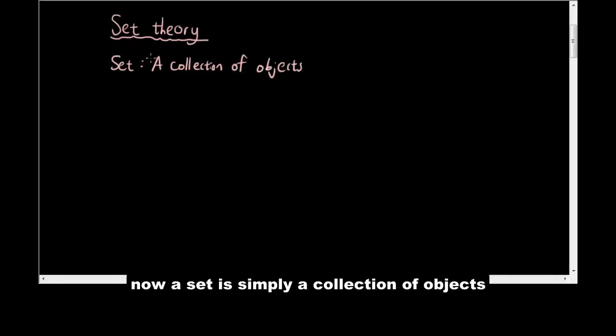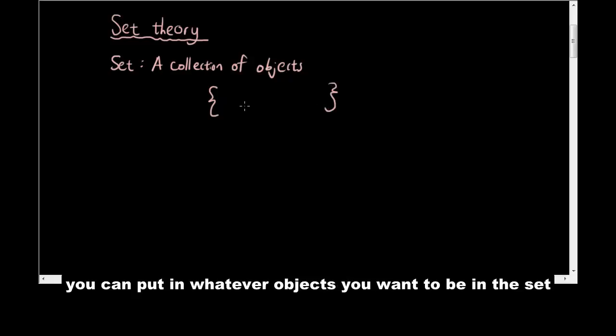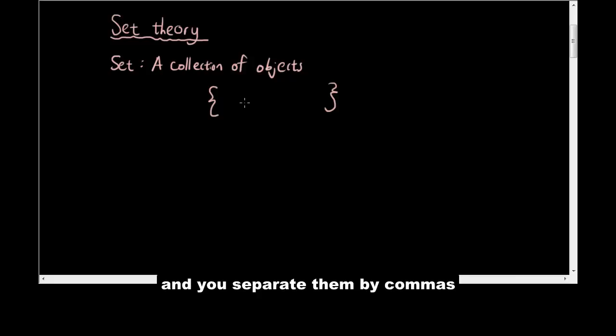A set is simply a collection of objects. The notation for a set - basically you draw something that's similar to a bracket, but these are called braces. Within the braces you can put in whatever objects you want to be in the set, and you separate them by commas.